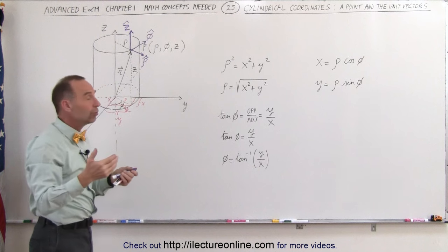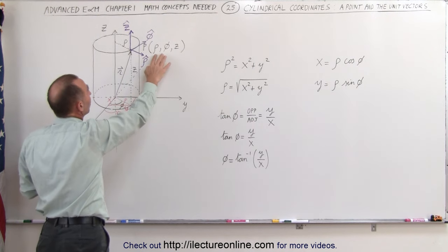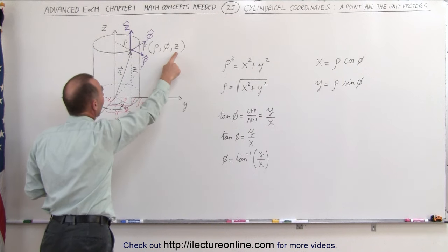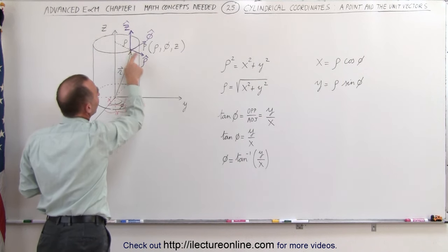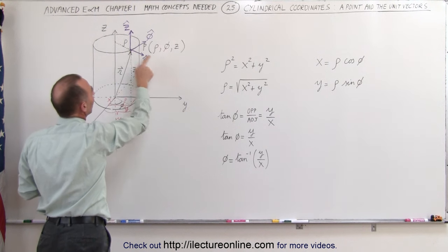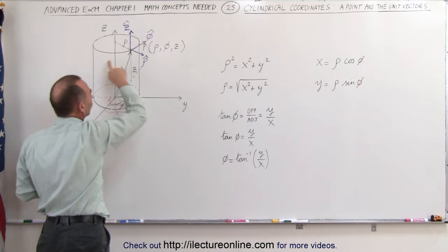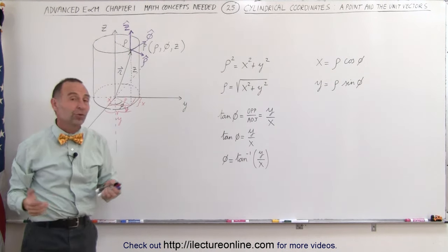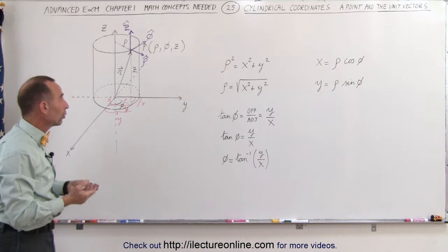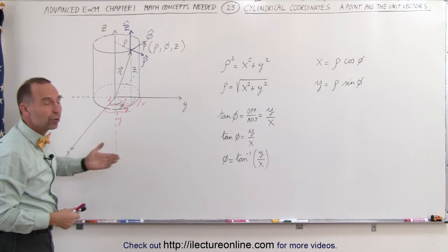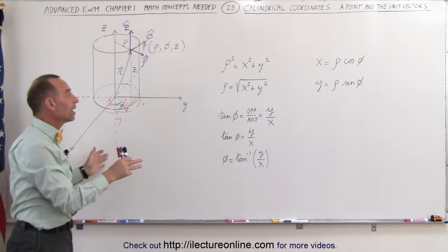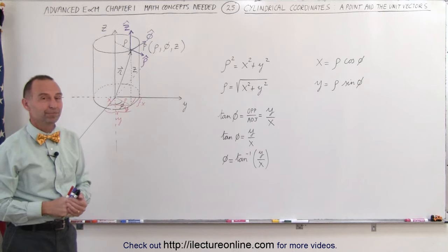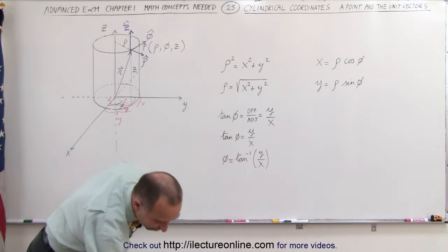So notice, any point P can be defined with the three coordinates: rho, phi, and z. And we can have the unit vectors defined as rho unit vector going straight out, phi unit vector going along the circular curve here, and the z-unit vector straight up from the point along the z-axis. So that's the definition of the cylindrical coordinate system, and we'll show you a few more videos that will show you more detail of how to operate with cylindrical coordinates. And that's how it's done. Thank you.